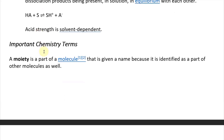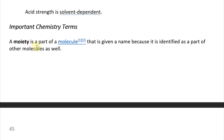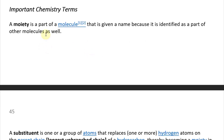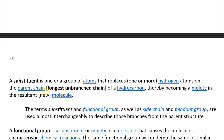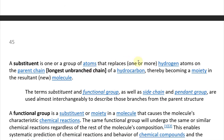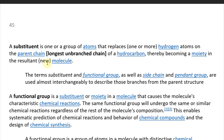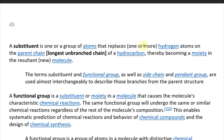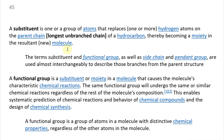Now let's look at some more important chemistry terms. A moiety is a part of a molecule that is given a name because it is identified as part of other molecules as well. A substitution is one or a group of atoms that replaces one or more hydrogen atoms on the parent chain or the longest unbranched chain of a hydrocarbon, thereby becoming a moiety in the resultant new molecule.